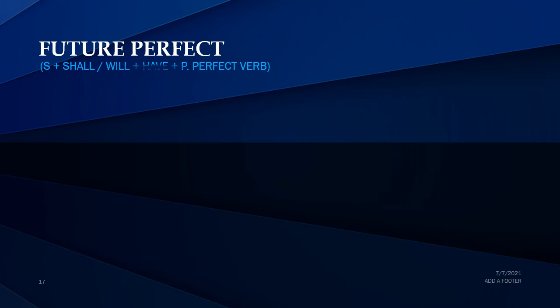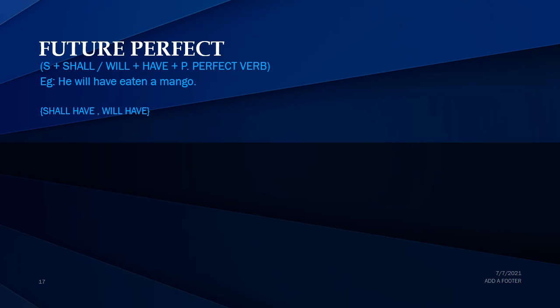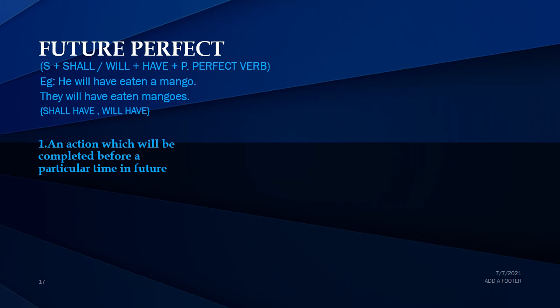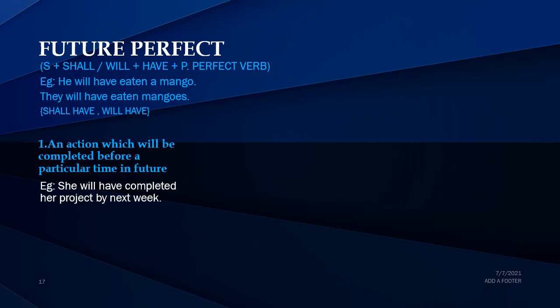The next tense is future perfect tense. It is in the format: subject plus 'shall have' or 'will have' plus past participle form of the verb. For example: 'He will have eaten a mango', 'They will have eaten mangoes'. This tense is used to say that an action will be completed before a particular time in the future. For example: 'She will have completed her project by next week'. Keywords used in future perfect tense are 'by' and 'within'.